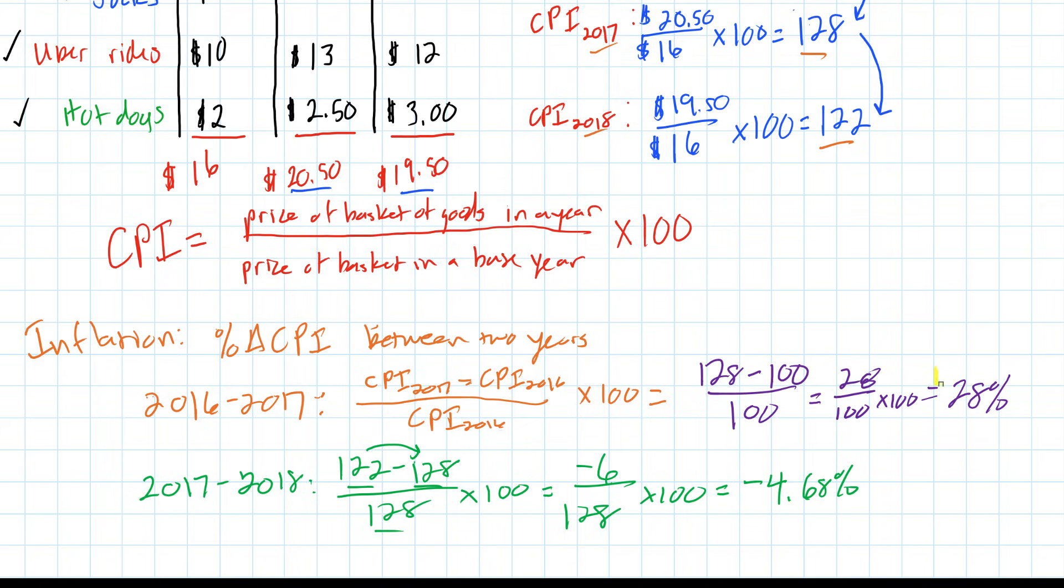Just a quick observation. In this example, we had a year in which inflation was very high at 28%, and we had a year in which there was actually deflation of 4.68%. If the CPI increases between two years, there's inflation. If the CPI decreases between two years, there's deflation.